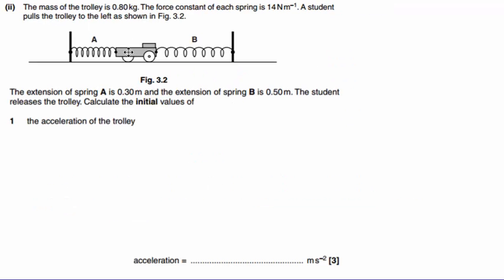The next part of the question shows that the trolley has been pulled to the left and then released, and we need to calculate the initial value of the acceleration of the trolley. Now, there are a few bits of information we've been given here. The first is that the trolley has a mass of 0.8 kilograms, and that the springs have force constants of K here, which is 14 newtons per meter.